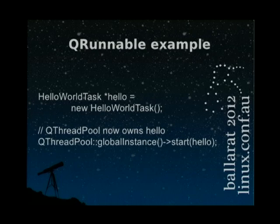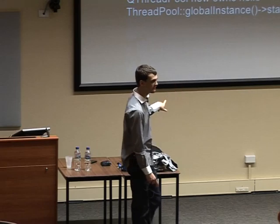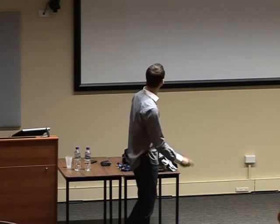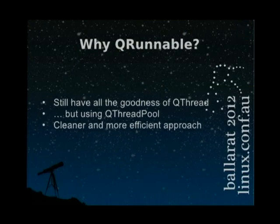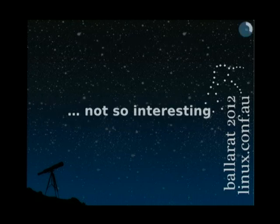The runnable gets owned by the QThreadPool, meaning it will be deleted when it ends. Why QRunnable? You have all the goodness of QThread if you've been using QThread in a basic way — the run function, running in a separate thread — but you can use QThreadPool and get all that goodness. If you have to repeat the same operation many times, QRunnable gives a performance increase because you won't be creating a thread and instantiating it every time. It's basically a cleaner and more efficient approach.